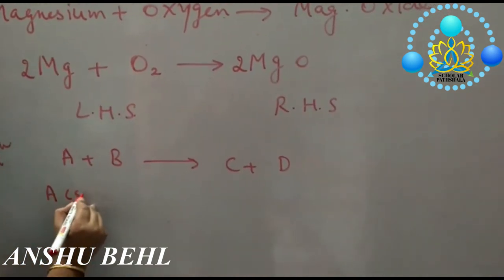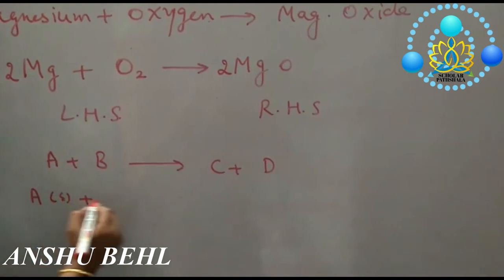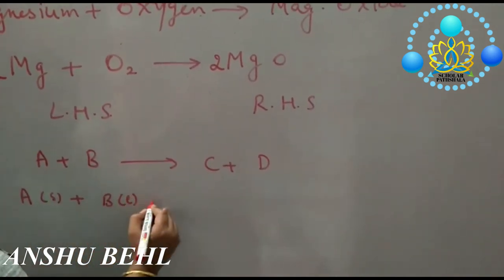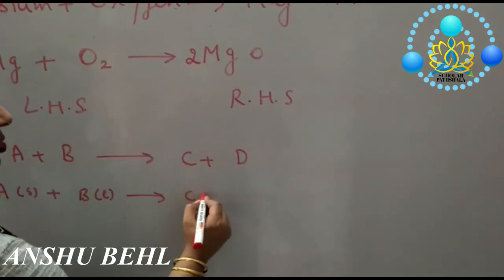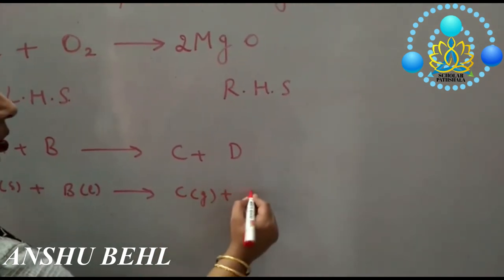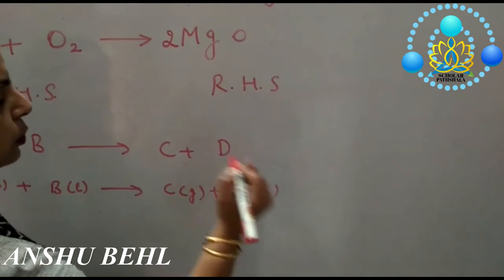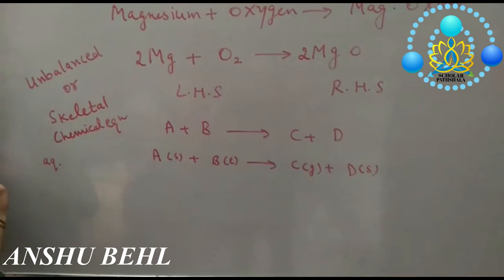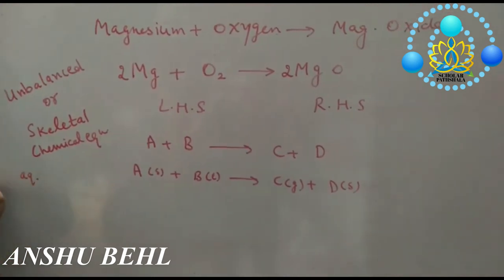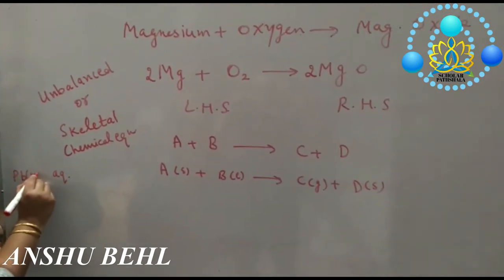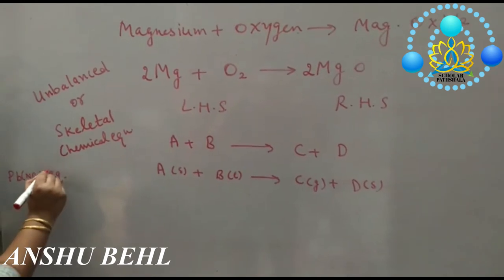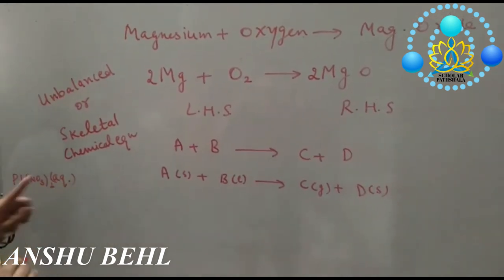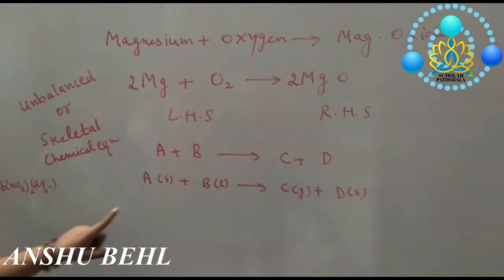You can mention the state of substance. Say it is solid, you can write S. L for liquid, G for gas, S for solid. If something is in the form of aqueous solution, you can mention it like this: aqueous. Like we have taken lead nitrate aqueous solution, so we will mention in square bracket, close bracket, aqueous.